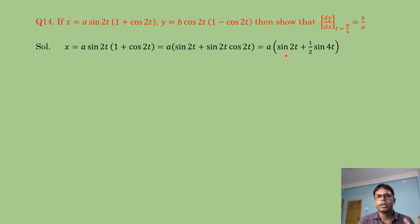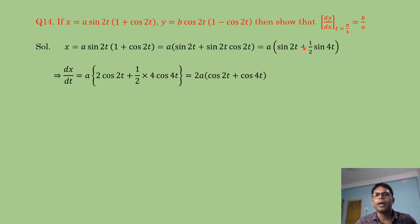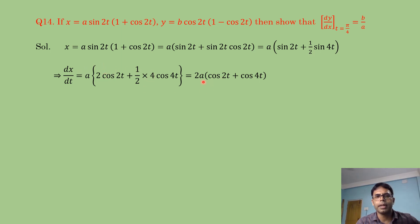Differentiating: dx/dt = a[2·cos2t + ½·4·cos4t] = a[2·cos2t + 2·cos4t] = 2a(cos2t + cos4t).